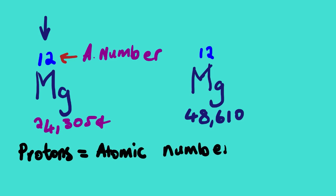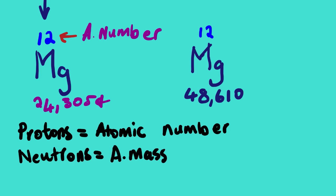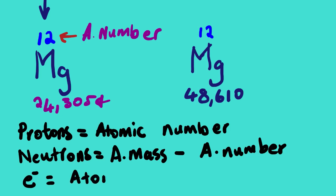The number of protons will never change. If the atomic number of magnesium is 12, magnesium will always have 12 protons — it doesn't matter whether we are dealing with an element or an ion. The equation to calculate neutrons is: neutrons = atomic mass minus the atomic number. Write this equation down. And electrons is equal to the atomic number.